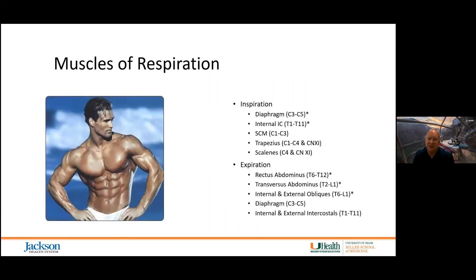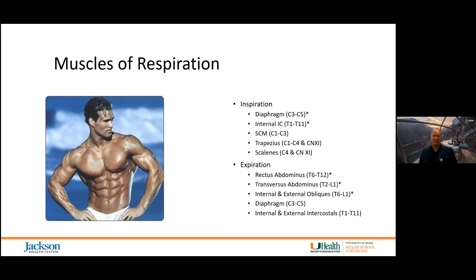Let's talk through the muscles of respiration. Inspiratory muscles include the diaphragm and internal intercostal muscles — those are the primary active muscles of inspiration. We also have accessory muscles: the sternocleidomastoid, trapezius, and scalenes. Expiration is primarily a passive process — relaxation of the diaphragm and intercostal muscles — but active expiration requires activation of the rectus abdominis, transverse abdominis, and internal and external obliques.